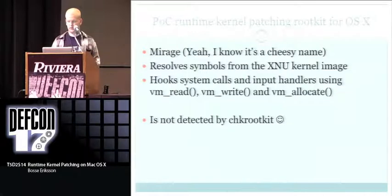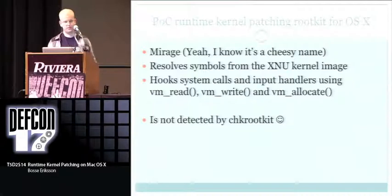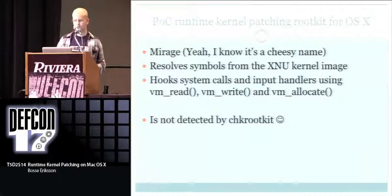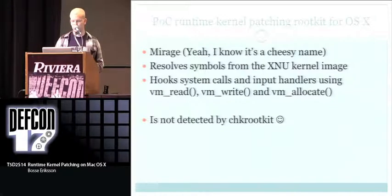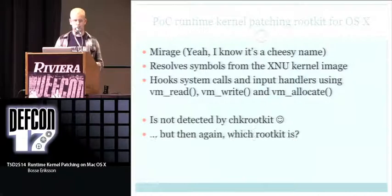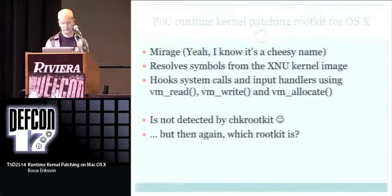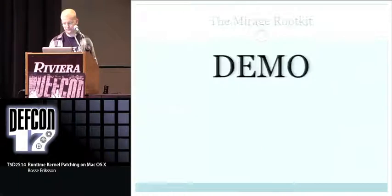I'm going to show a proof of concept rootkit I put together for this — it's called Mirage. It resolves symbols from the XNU kernel and hooks system calls using the named functions. It's not detected by chkrootkit, though I don't know any serious rootkit that is detected by chkrootkit. Demo time — and I'm not going to do this live, I have videos.